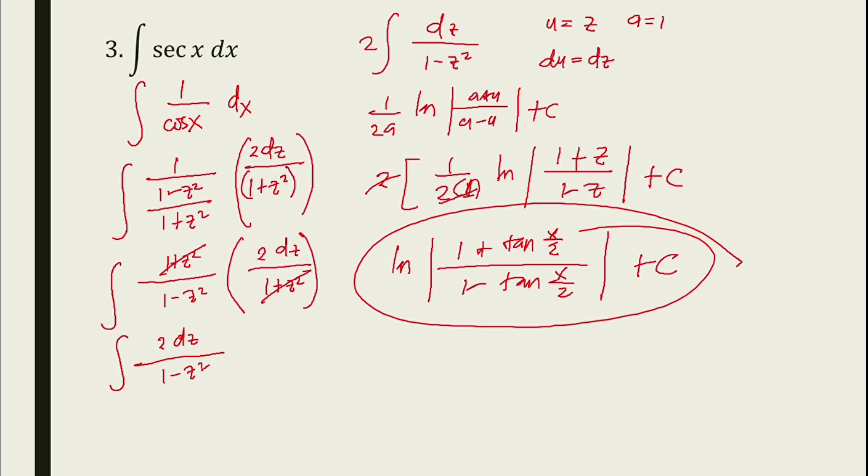Substituting z equals tan(x/2), the final answer for number 3 is ln|(1 plus tan(x/2))/(1 minus tan(x/2))| plus C.